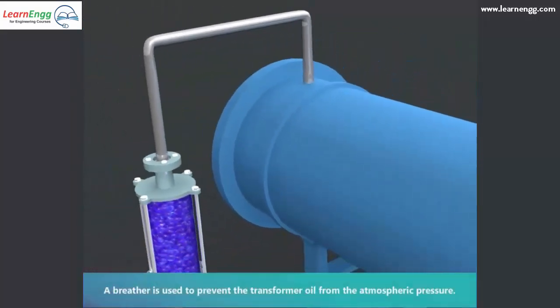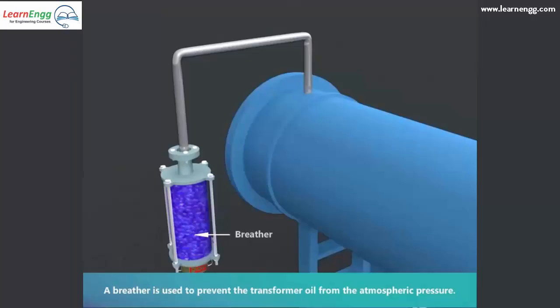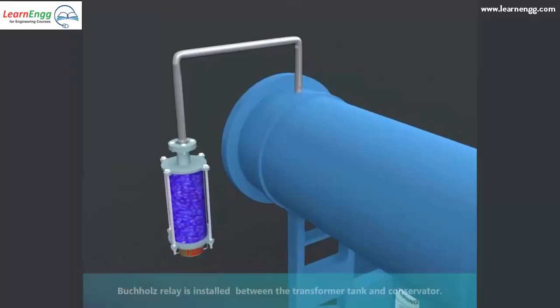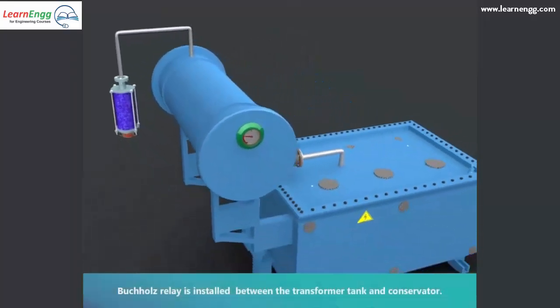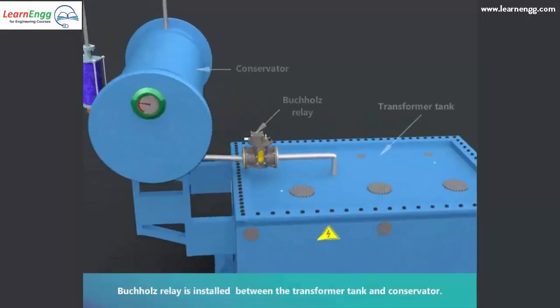A breather is used to prevent the transformer oil from the atmospheric pressure. Buchholz relay is installed between the transformer tank and conservator.